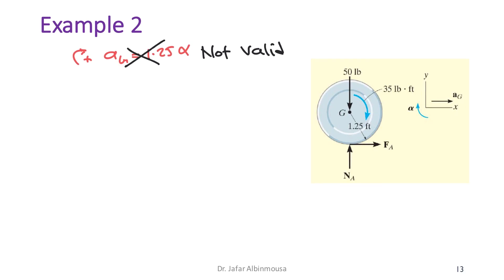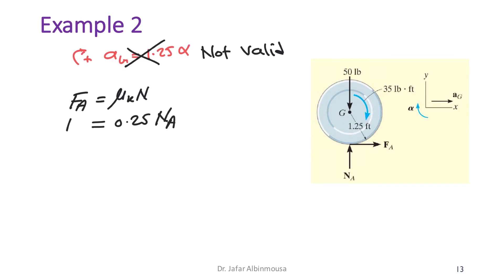We need a different fourth relation: f_A = μ_k·N_A = 0.25·N_A. This is the new fourth relation.